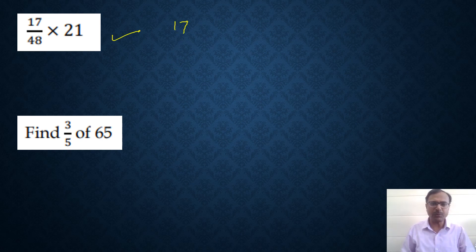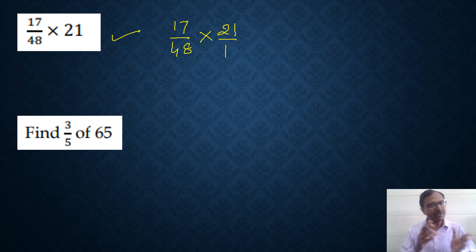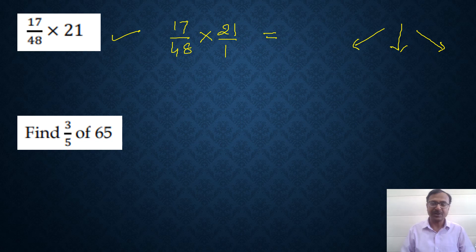Let's look at some questions on multiplication of fractions. We have 17 upon 48 and we want to multiply that by 21. When you have a whole number like 21, it means it is 21 upon 1. When multiplying fractions, the numerator is multiplied by the numerator and the denominator by the denominator — you never cross-multiply. You can cancel all common factors between numerators and denominators, either vertically or diagonally. Here, 21 and 48 are both divisible by 3.